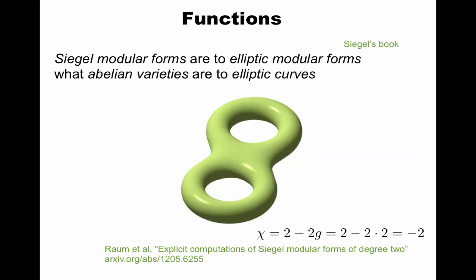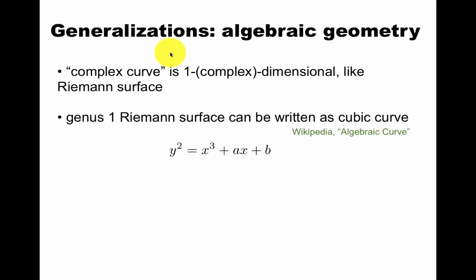Now what you want to do is talk about functions on these spaces. And on genus 2 and higher, these are Siegel modular forms. They are to elliptic modular forms what abelian varieties are to elliptic curves. This is the Norwegian mathematician Abel. And this is a nice paper. So the claim is that Martin Raum will eventually write a new book on this that we're all very much looking forward to. Riemann surfaces are very important in algebraic geometry because a complex curve is one complex dimensional like a Riemann surface. And in fact, any genus 1 Riemann surface can be written as a cubic curve, so this simple expression by the Weierstrass p-function.